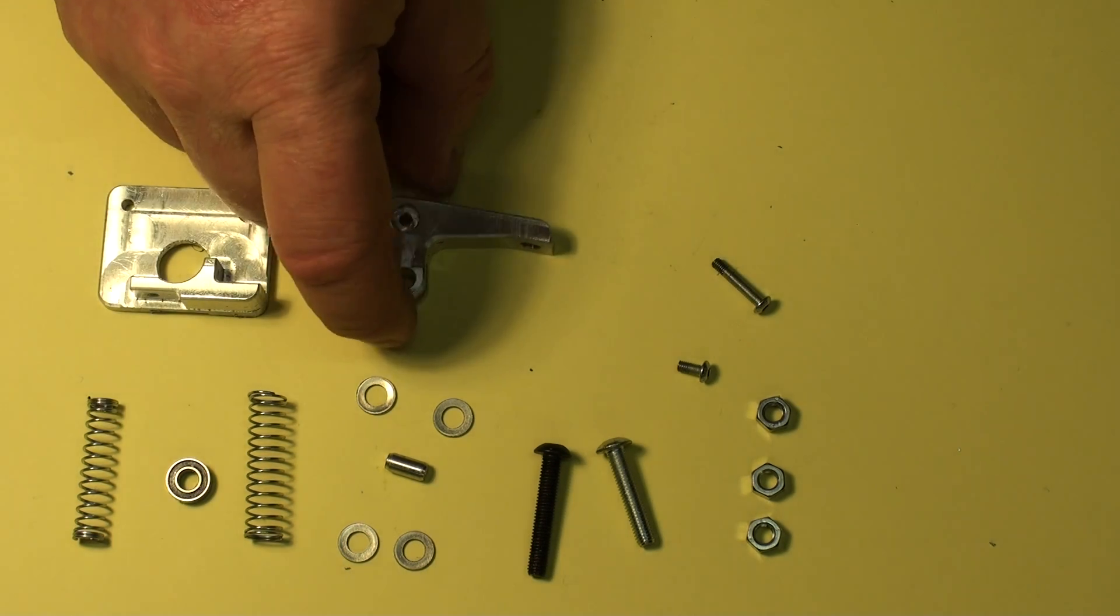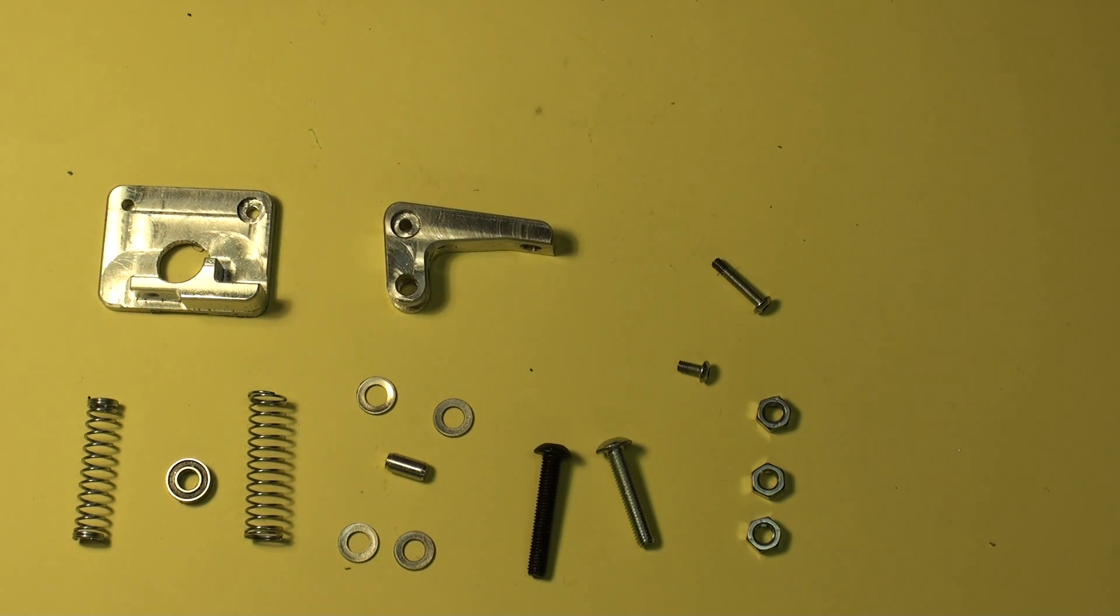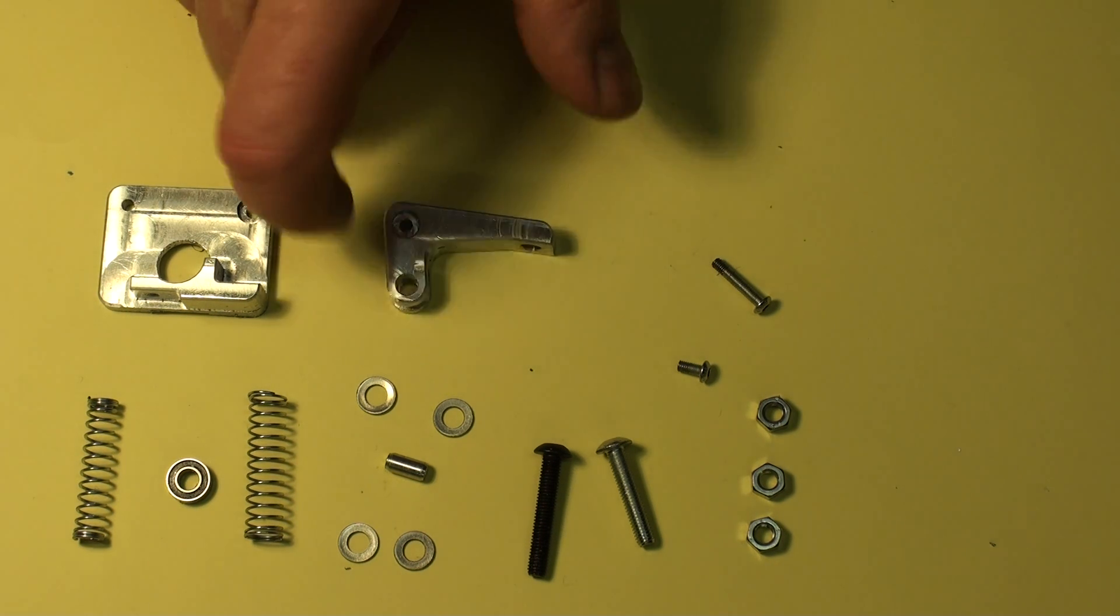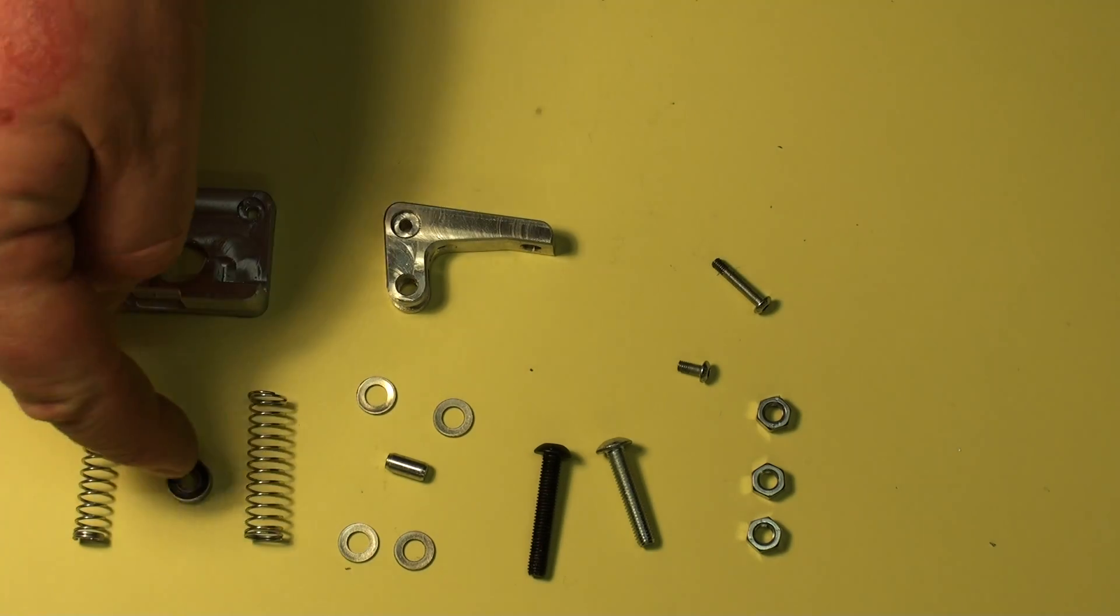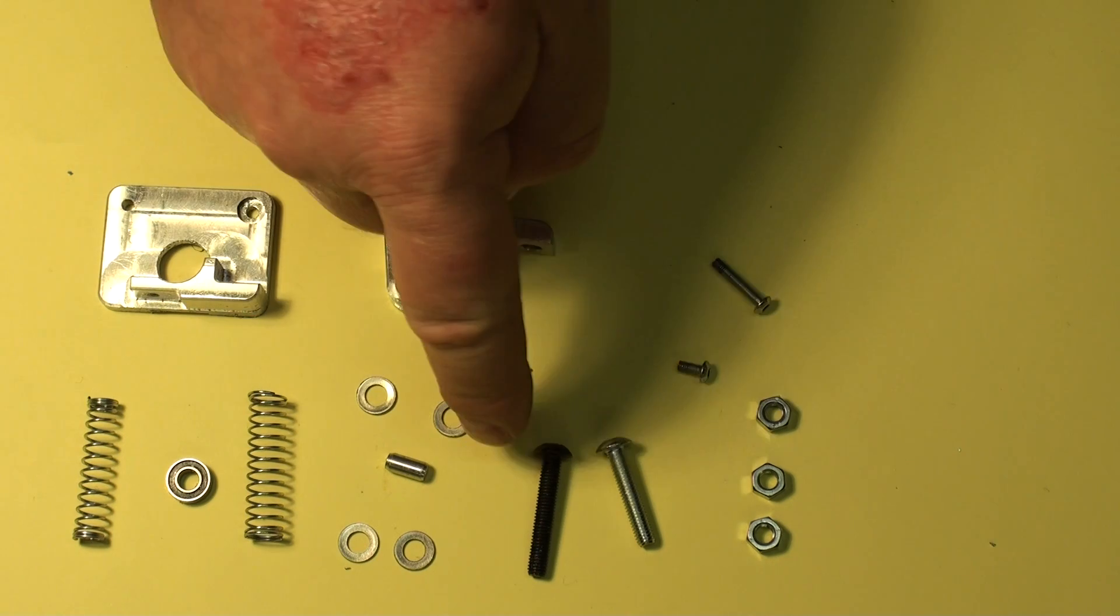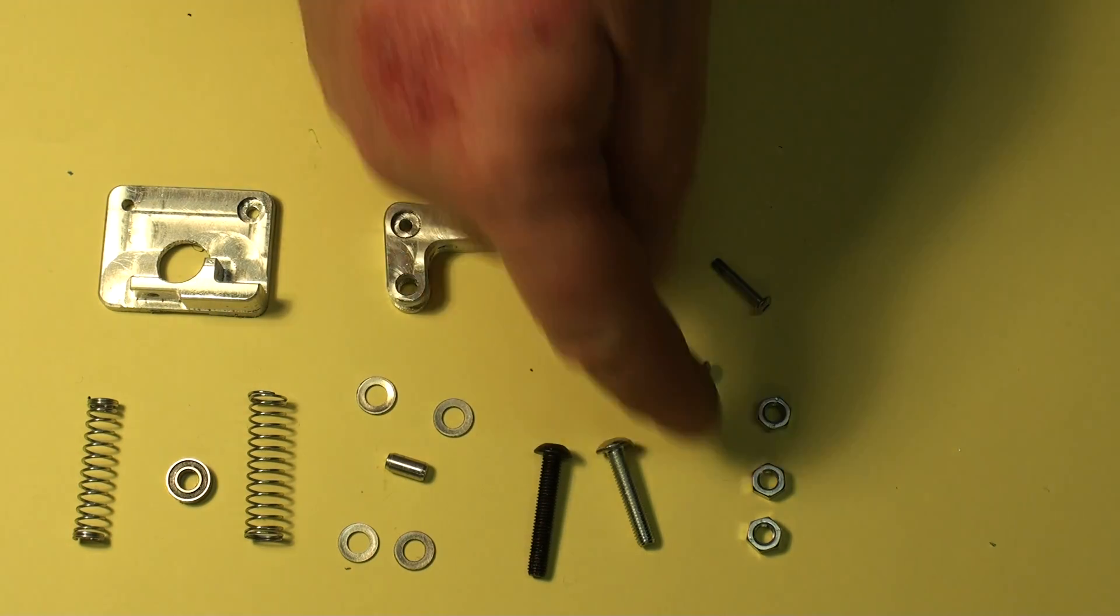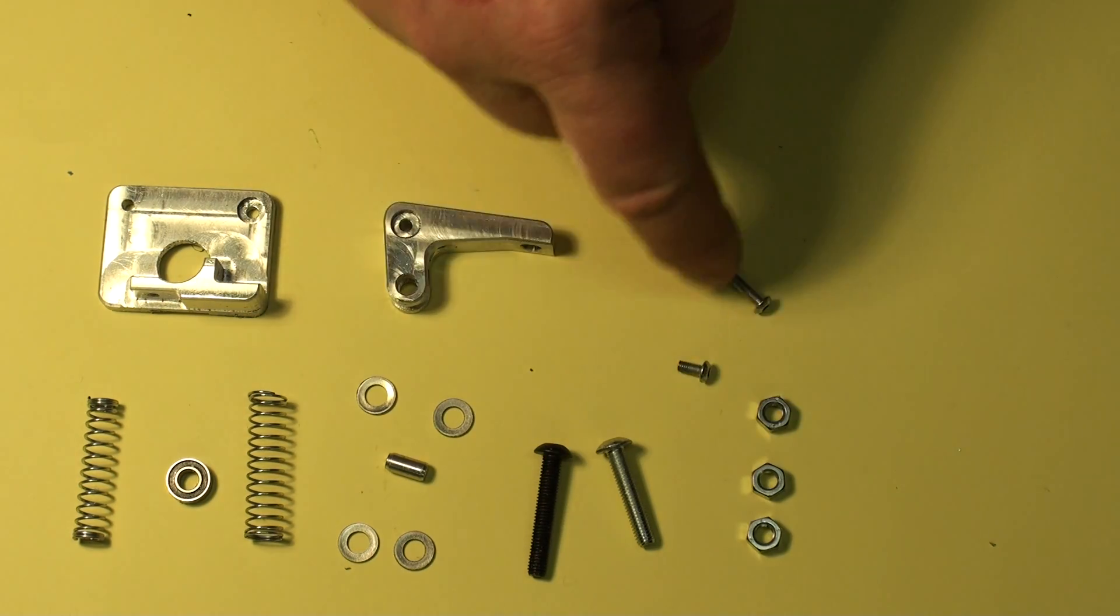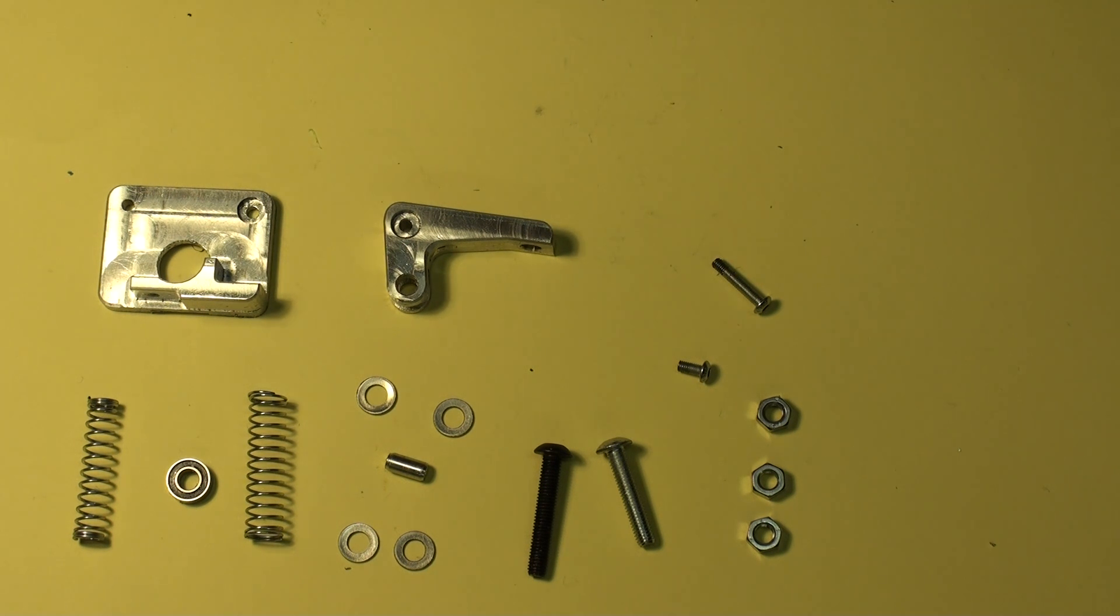What you've got there is your machined back plate, machined pinch arm, two springs, roller bearing, pin, four washers, two screws (one long and short), three nuts and two attaching screws. Now that's the standard kit as it comes to you.